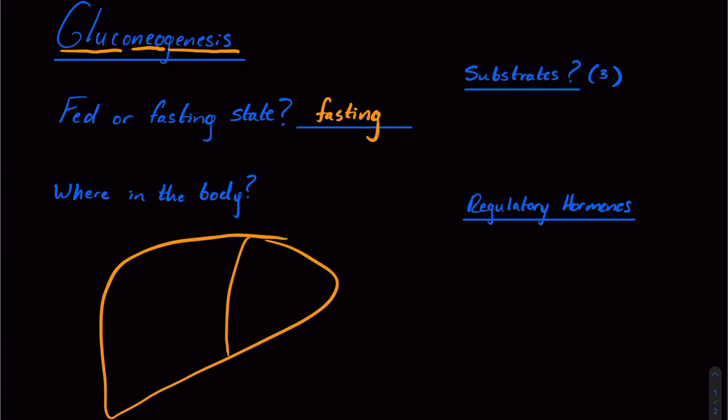Next, substrates. This is a little bit lower yield, but something they could ask you a difficult question on, and it could help raise your score, especially if you're one of those high scorers looking to get 100th percentile instead of 95th percentile. So one of those is going to be lactate that we're going to get when we're running anaerobic glycolysis in the absence of oxygen.